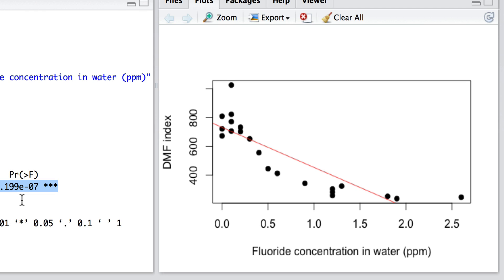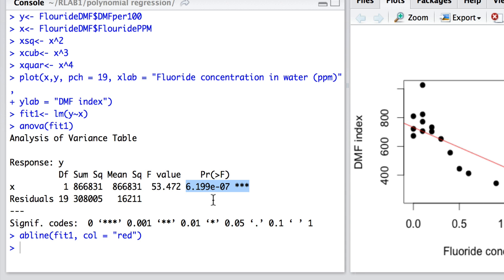Now you will note that there is some curvature in that relationship. So perhaps a higher order model would be a better predictive model. We can fit a higher order model by simply saying, for example in this case, fit2 is the linear model of y and how it's related to x and x-squared.